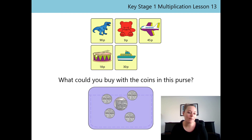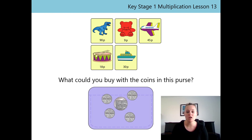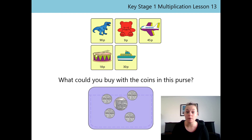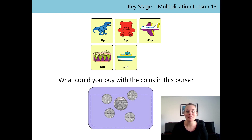Well done. What about the aeroplane? Do we have enough money to buy the aeroplane? No, we don't — because the aeroplane costs 45P and we only have 30P in our purse. What about the drum? Do we have enough money to buy the drum? Yes, that's right — we do have enough money because the drum costs 18P and we've got 30P in our purse. Can we buy the boat? Yes, we can buy the boat because the boat costs 30P and we've got 30P in our purse. Fabulous, well done.